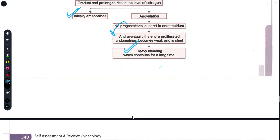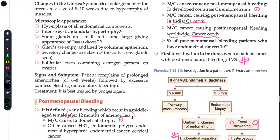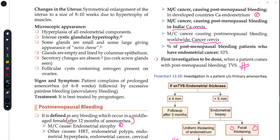In terms of uterine changes, the uterus is symmetrically enlarged and its size becomes almost equivalent to 8 to 10 weeks of pregnancy, due to hypertrophy of the muscles. Hypertrophy is seen in the muscle cells.